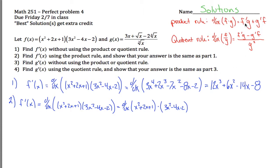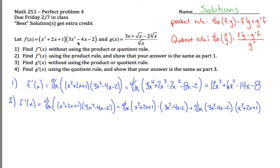You're not done — we've only done part of the formula. To that you need to add the derivative of g: the derivative of 3x squared minus 4x minus 2. And you still need to multiply that by f, which is x squared plus 2x plus 1. Don't confuse these f and g with the problem's f and g. The product rule calls the first of the two things being multiplied f.